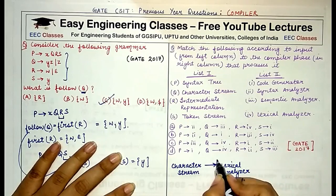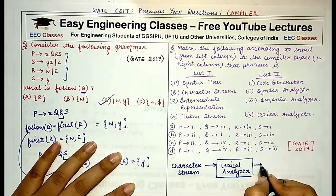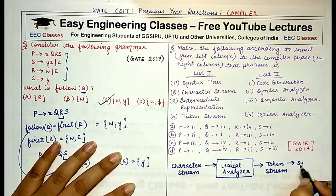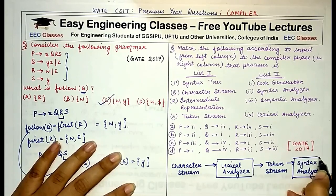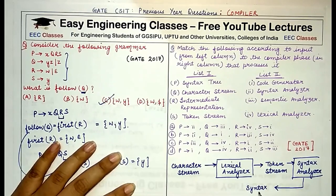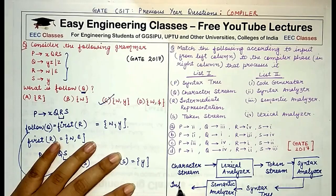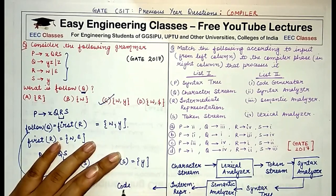The lexical analyzer receives the character stream and generates a token stream. This token stream is then provided to the syntax analyzer. The syntax analyzer takes the token stream and generates syntax trees. These syntax trees serve as input to the semantic analyzer.